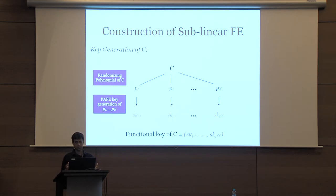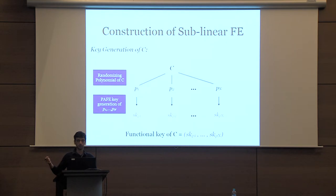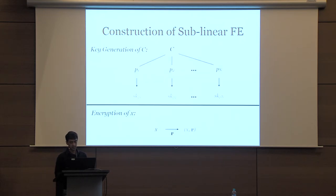Let's see how to construct sublinear FE. For key generation, to generate a key for circuit C: first execute the randomizing polynomial encoding scheme on C to get polynomials P1 to Pn, then generate PAFE keys for each one of these polynomials. The functional key corresponding to C will be the collection of all these PAFE functional keys. The encryption algorithm takes as input X, picks a random string R, and then executes a PAFE encryption of (X, R).